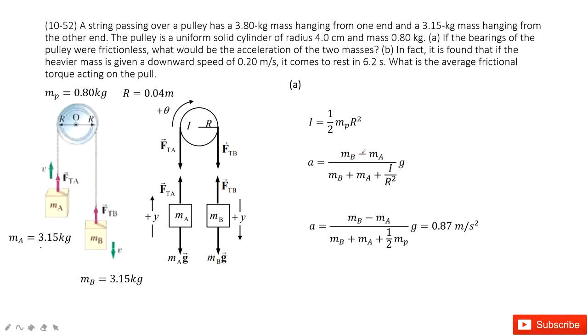So inside, in this one, we input the I inside, we get it looks like this one. And input all the known quantities, you get the final answer, 0.87 meters per second squared.